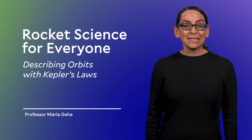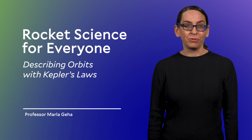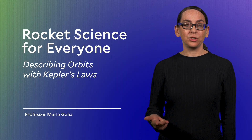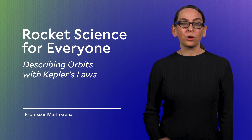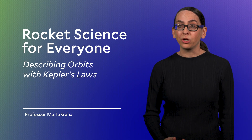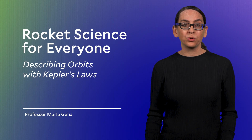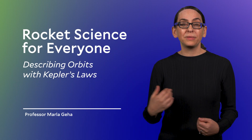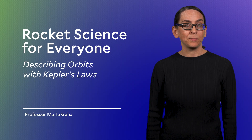Welcome back. Last segment we defined three orbital regions: low Earth, medium Earth, and geosynchronous orbits. In this segment, our goal is to come up with a few general rules which govern these orbits. Once we have these rules, we'll focus again on those three orbital regions, but this time armed with a way of quantifying what we see.